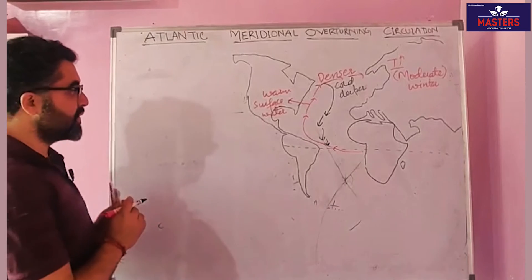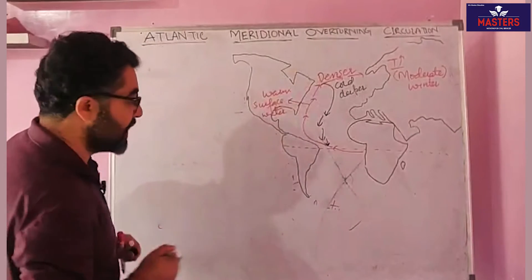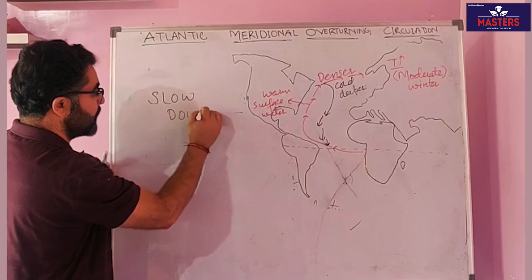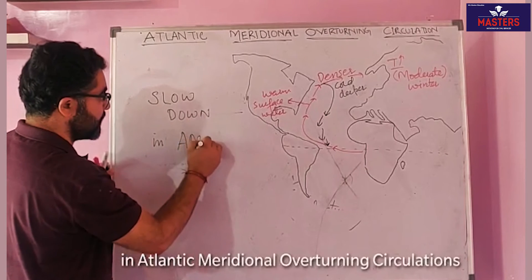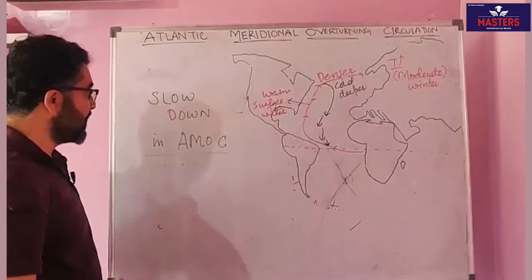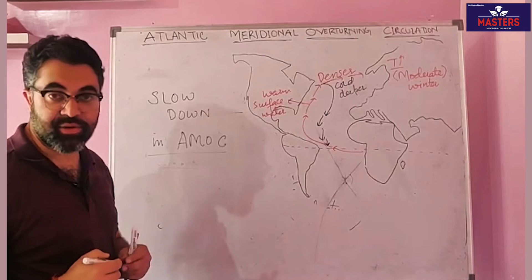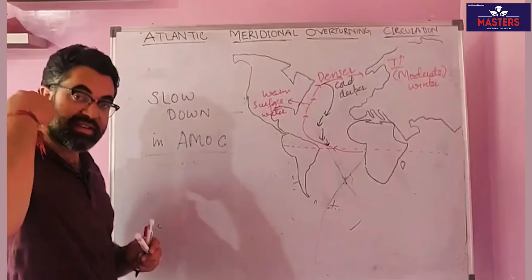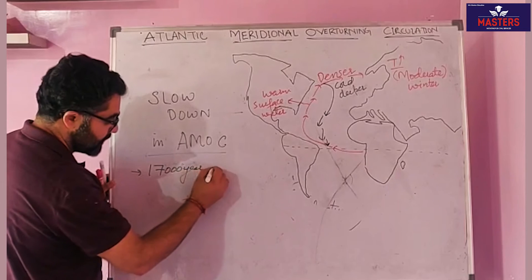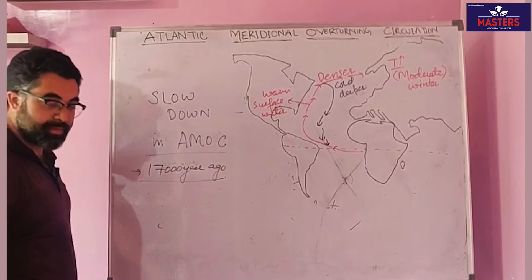Now why are we discussing this? What has been observed is that this entire circulation — the Atlantic Meridional Overturning Circulation — has shown a slowdown over the last 15 years. If we go further back in history, around 17,000 years ago a similar slowdown pattern was also observed.